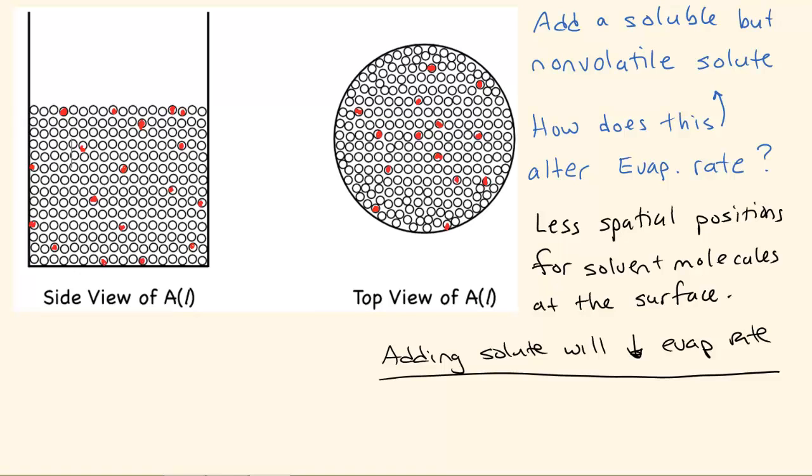Remember, the solvents are the little hollow spheres. That's what we started with. And the red dots, those are actual solute molecules. So if there's more solute, there's even going to be less evaporation. So what we see is that the amount of solute we put in, the number of solute particles we put in, will affect the evaporation rate by lowering it.